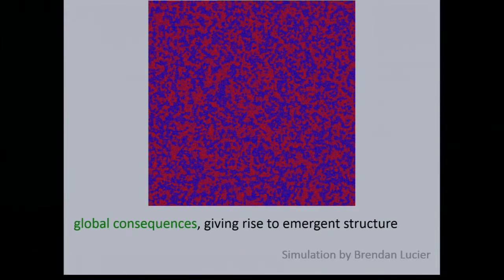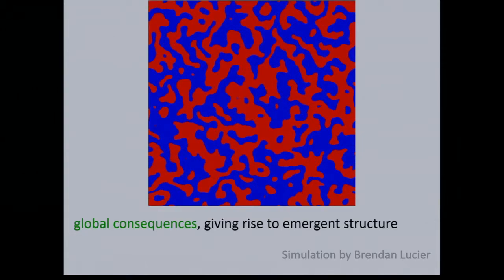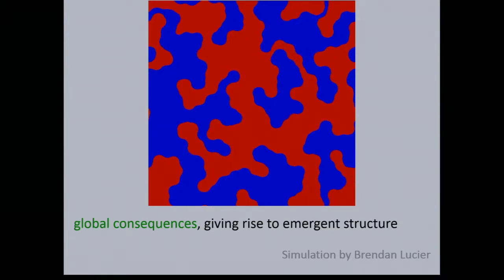As the agents move, you can see these local interactions — where they want to not be a minority in their local neighborhood — giving rise to a global structure with not as much integration as in the initial picture, but a mixture of local homogeneity and global integration. This simulation was written by Brendan, and Brendan, Bobby, and I are working on formalizing notions of this global structure resulting from local behaviors. I'll talk more about this Schelling simulation in a 1D setting later.